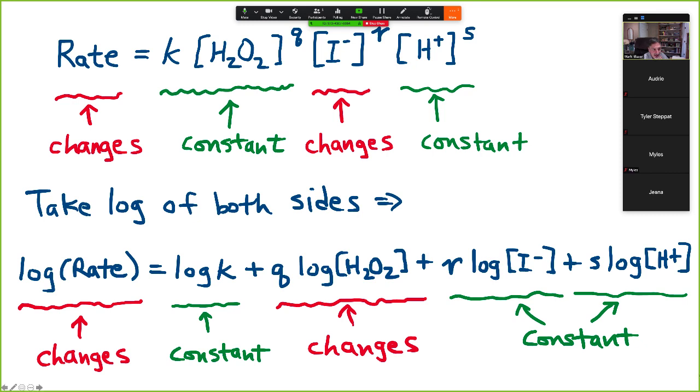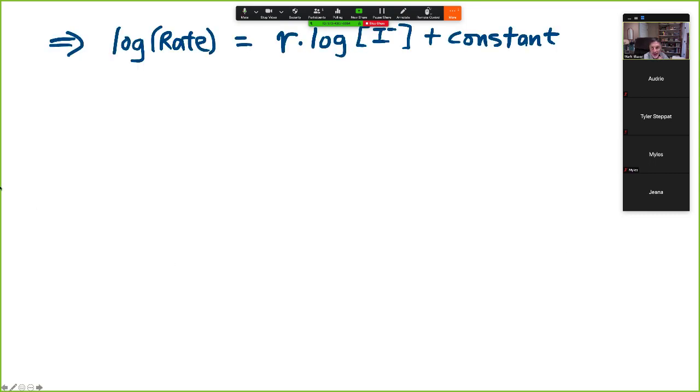And if I take all of these things that are constant, these two terms and this one, and just lump them together, I get this. So log of rate equals R log of I minus and a bunch of constant stuff. And this may not immediately be obvious, but if we think of log of rate as being like a Y variable and log of I minus as being like an X variable, R is just a number, so that's like a proportionality constant or even a slope. And then B is a constant, or the other stuff is a constant, which is actually a Y intercept.